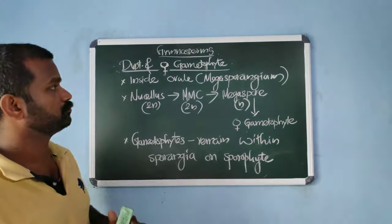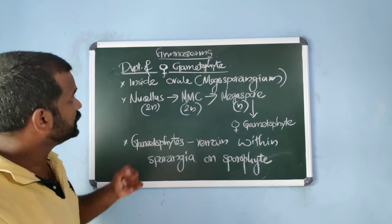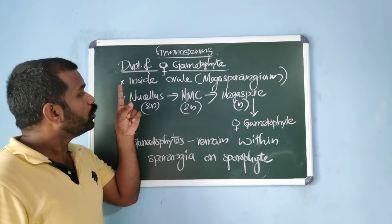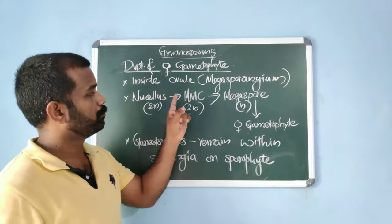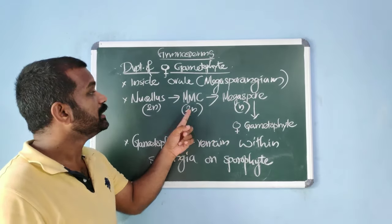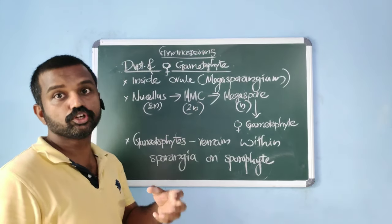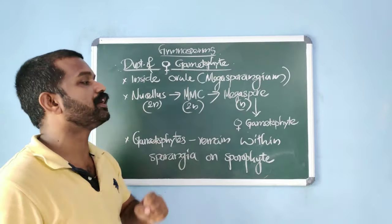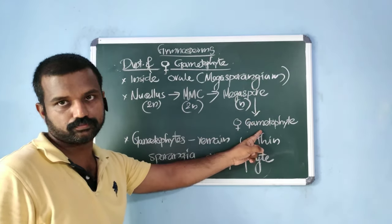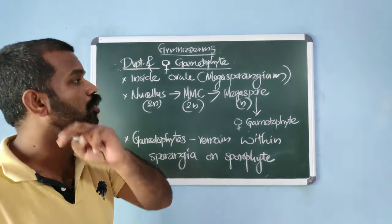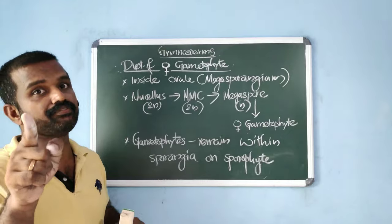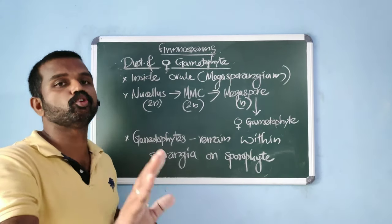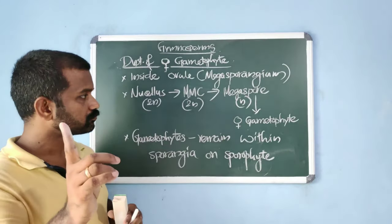Development of the female gametophyte takes place inside the ovule, which is the megasporangium. Within the ovule there is a tissue known as nucellus, which is diploid. One cell of the nucellus differentiates to form the megaspore mother cell, also diploid. This undergoes meiosis to form four haploid megaspores. Among the four, three degenerate and one becomes functional, developing into the female gametophyte with two or more archegonia.